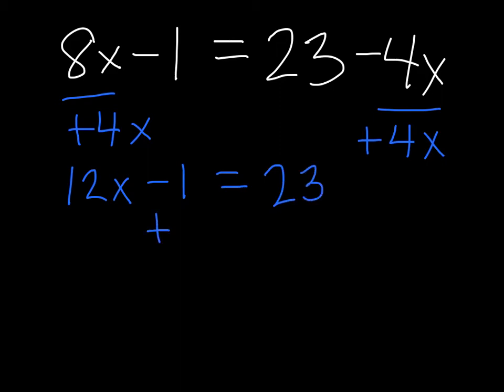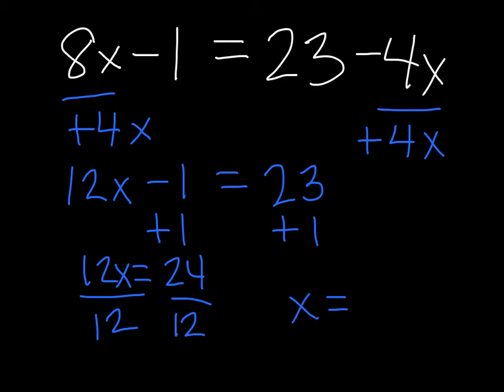Now I have to isolate my variable, so I've got to get rid of my negative 1. So I'm going to add 1. So 12x has the same weight as 24. And we want to divide by 12. So x has a value of 2.